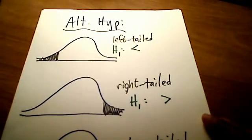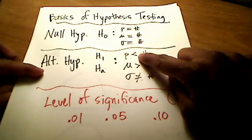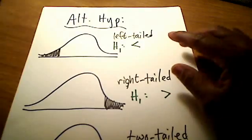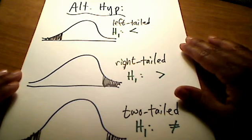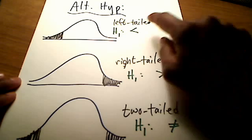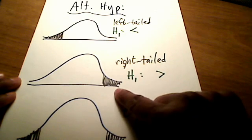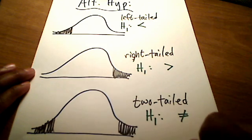What do I mean by the alternative hypothesis? If the alternative hypothesis has a less than symbol in it, we have a left tail test. If it has a greater than symbol, we have a right tail test. Or if it has the not equal to symbol, we have a two-tail test. That's important because in the traditional method we are interested in something called critical values.